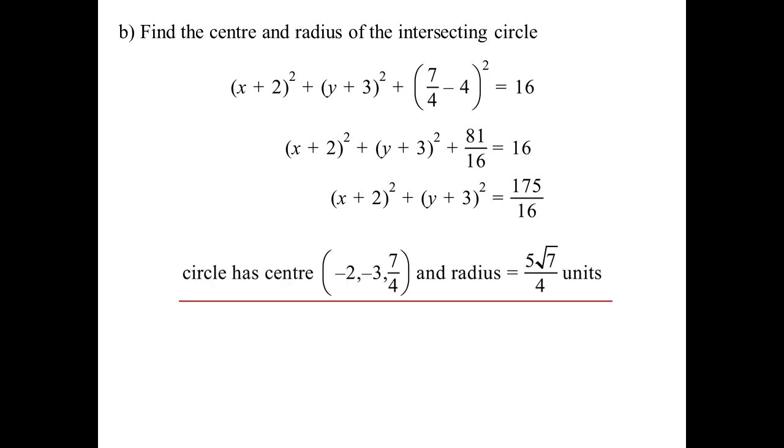So what is the center and radius of that intersecting circle? Well, I now know z is always 7 on 4 for that shape. So I can sub that in and I'll end up with a Cartesian equation for a circle. And there it is. So the center ends up being minus 2, minus 3, but don't forget the z value, which would be 7 on 4, because it's on the plane, 7 on 4. And the radius, 5 root 7 on 4 units.